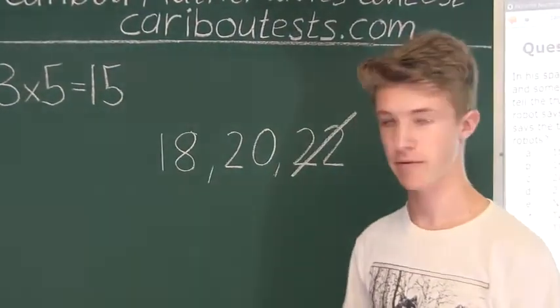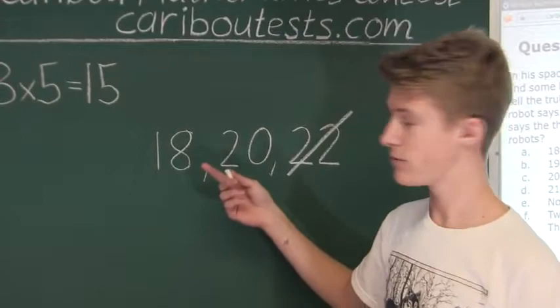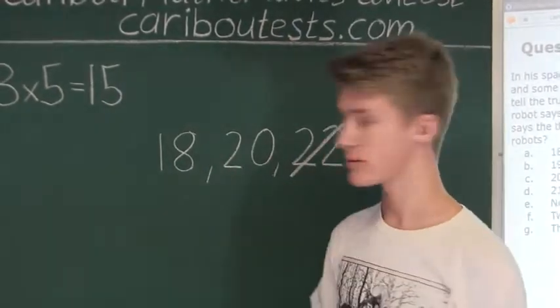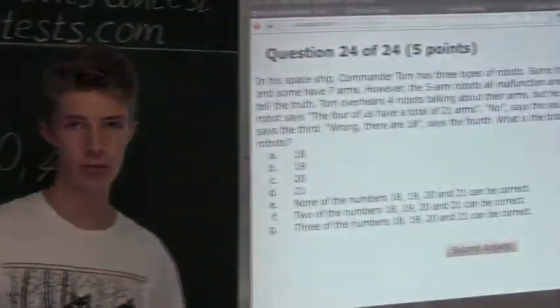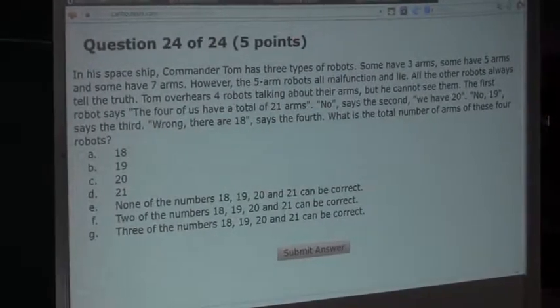Alright, now let's check if the fourth robot has five arms, giving the total of twenty arms for all four robots. Now, if the fourth robot would have five arms, that means that that fourth robot would be lying.